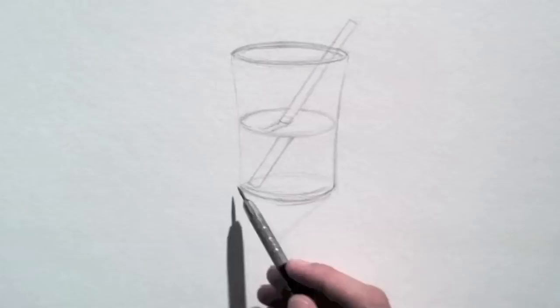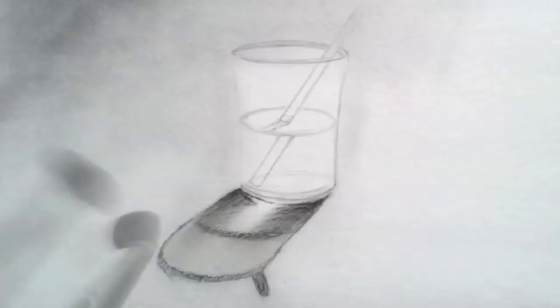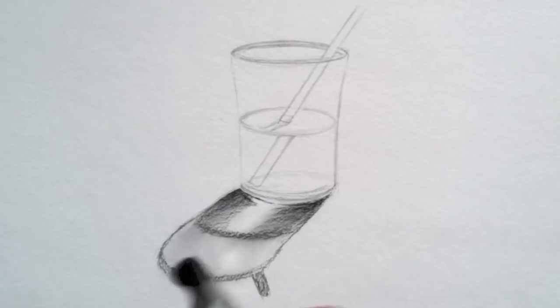For the shadow, I will use a hard charcoal pencil, which then I smudge with a brush. With charcoal powder and a brush, I tone the paper.